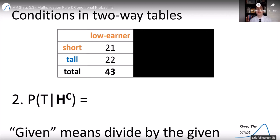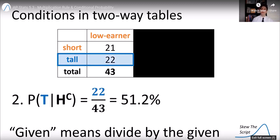Remember, given means divide by the given. So I'm going to divide by 43 my new total number of possibilities. Now I'm looking for the people among those who were tall. So I'm going to divide those 22 who were tall out of the 43. Probability is 51.2%.